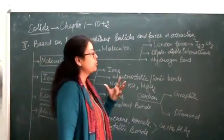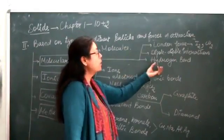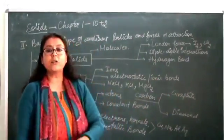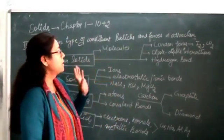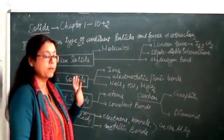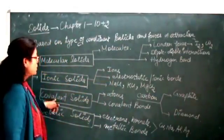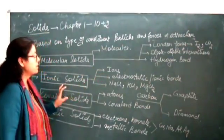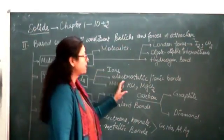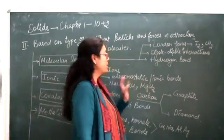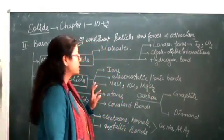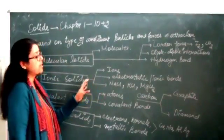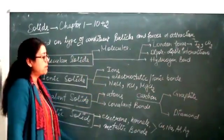And if we have hydrogen-containing molecules, the forces of attraction are hydrogen bonds — which is a bond between hydrogen and a highly electronegative atom. Then we go to ionic solids. The constituent particles are ions, and they have electrostatic forces of attraction, also known as ionic bonds. These are one of the strongest bonds amongst all.